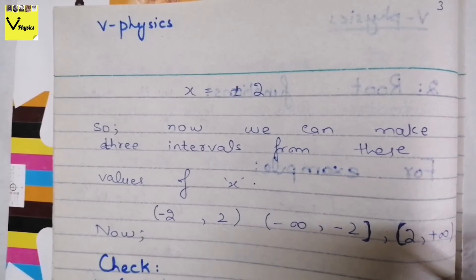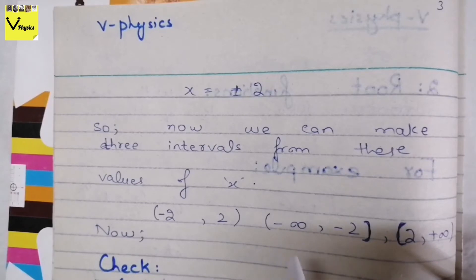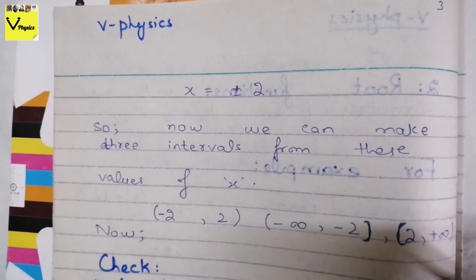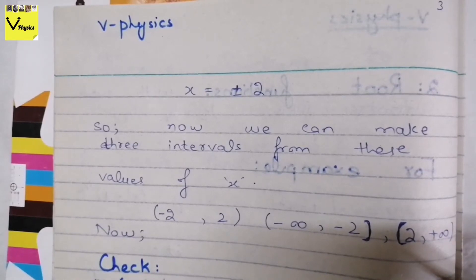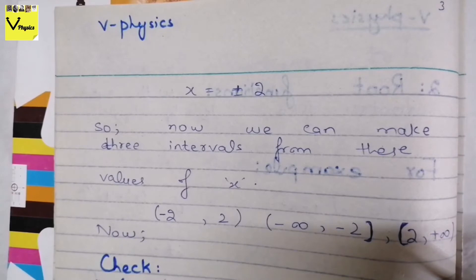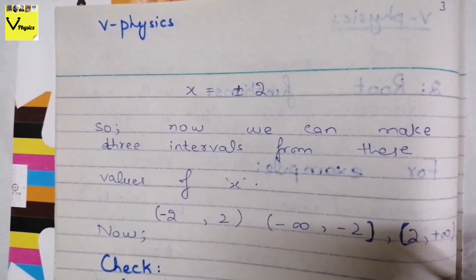With these three intervals, we have covered the set of real numbers: from −∞ to −2, then −2 to 2, then 2 to +∞. Now we check which interval makes the function complex. The interval that makes it complex we will remove, and what remains — which does not make it complex — will be our domain. For the interval −2 to +2, we put x = 1 in the original function and get √(−3), and putting x = −1 also gives √(−3). So all values in this interval make the inner term negative, making the function complex.